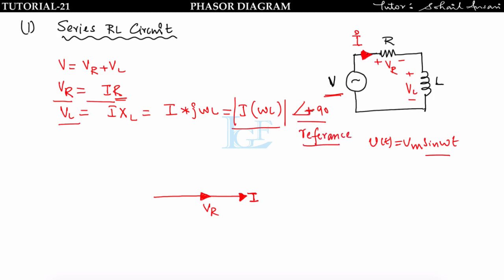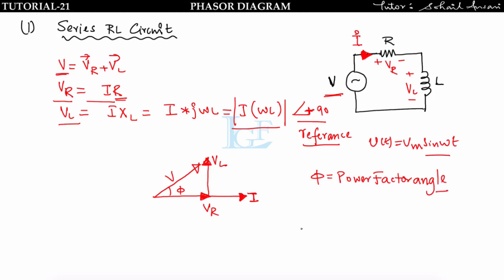With current I as reference at angle 0°, Vr is in phase with I. Vl has magnitude I·XL at +90° with respect to the reference current, so Vl leads current by exactly 90°. The net voltage V is the vector sum of Vr and Vl, giving V at some angle φ, where φ is known as the power factor angle — the angle between the net voltage and net current.